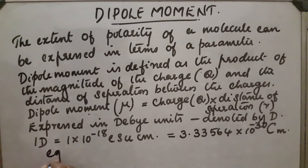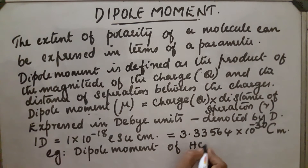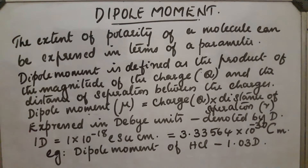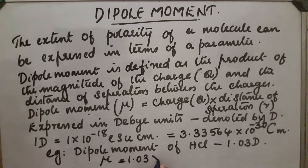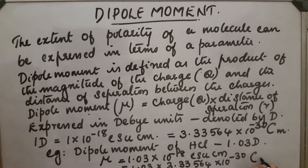Example: dipole moment of HCl is 1.03D. We can convert it into ESU centimetre and also into coulomb metre. So mu of HCl is equal to 1.03 into 10 raise to minus 18 ESU centimetre, or we can multiply 1.03 into 3.33564 into 10 raise to minus 30 coulomb metre.